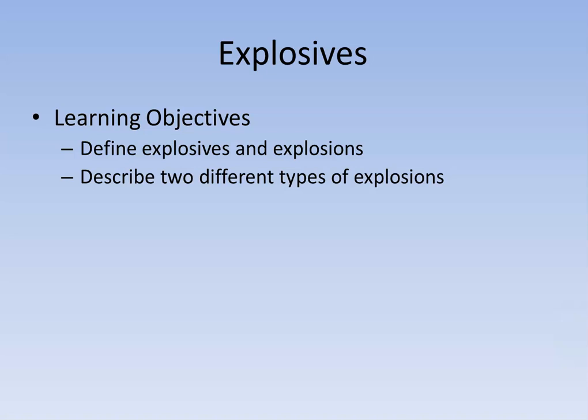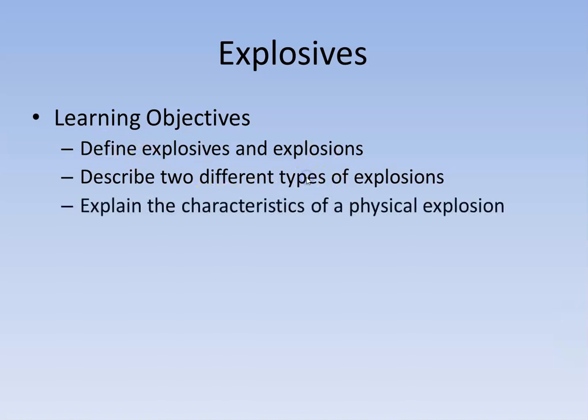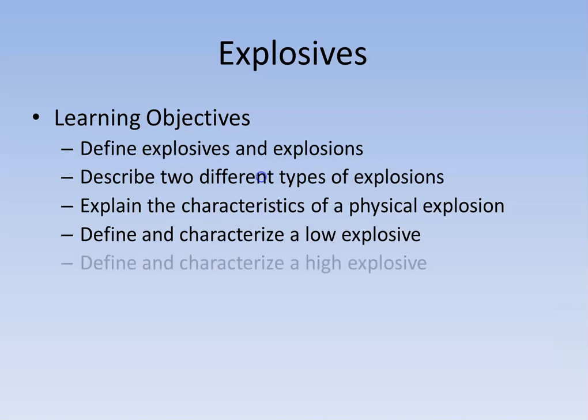One is referred to as a physical explosion, and one is referred to as a chemical explosion. We're going to be looking at these two different types. We're also going to explain the characteristics of a physical explosion, what causes it, and show some examples. Then we're going to define and characterize chemical explosives — there are two types: low explosives and high explosives.